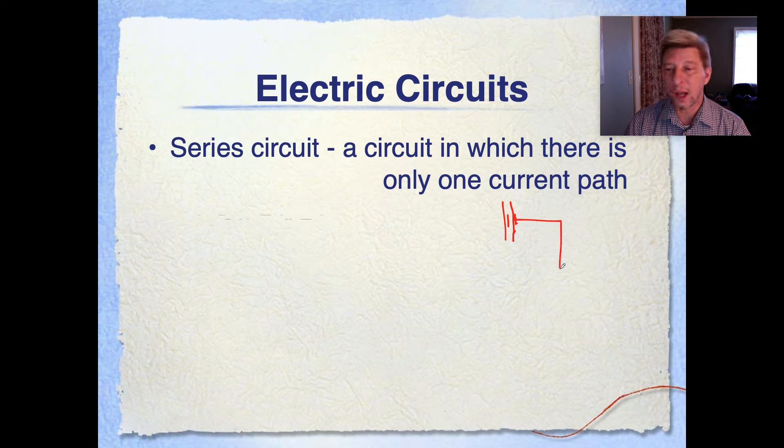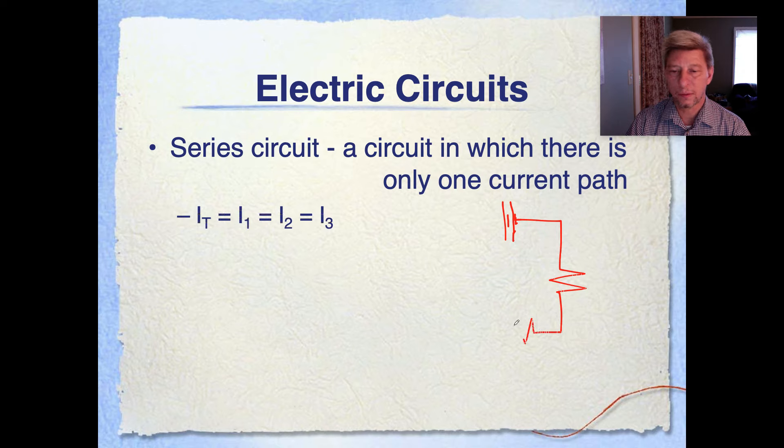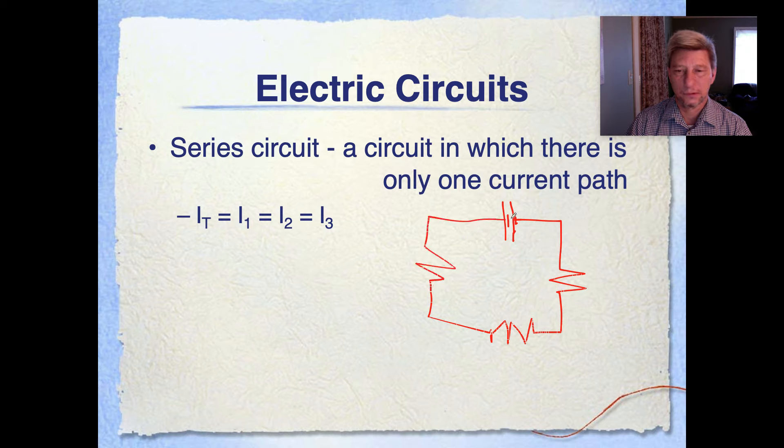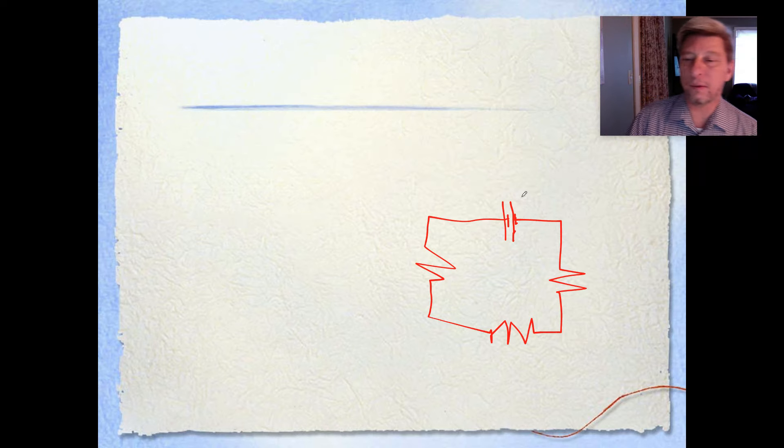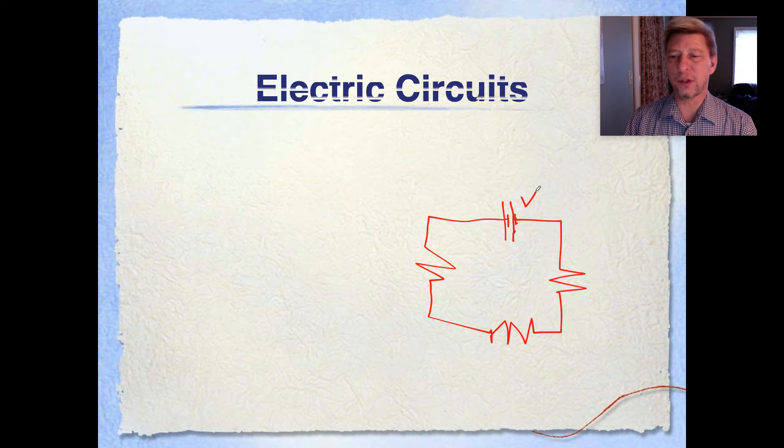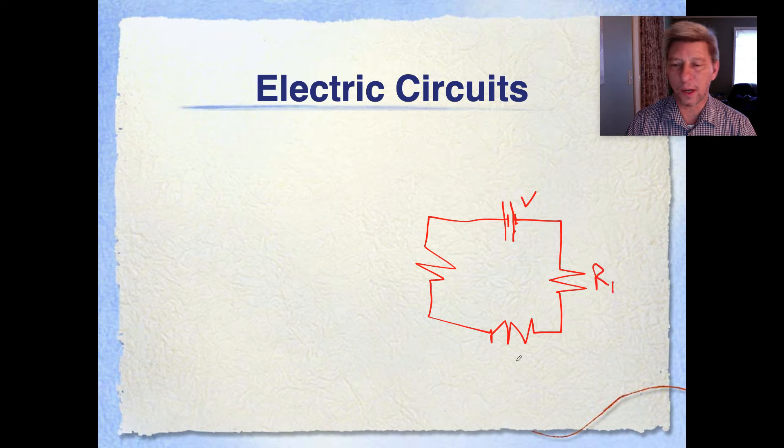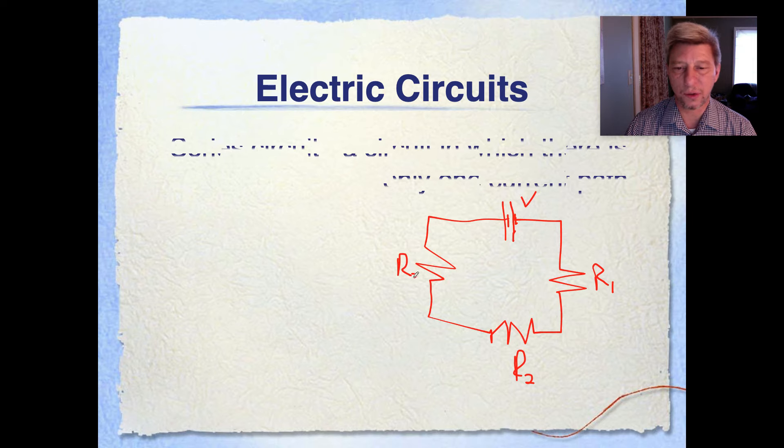In any event, I'm going to attach that to one resistor. The voltage is here. I'm going to call this resistor one. I'm going to call this resistor two. I'm going to call this resistor three. And so the circuit itself has only one path for the electrons to travel through.